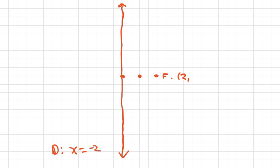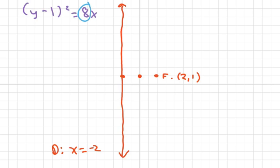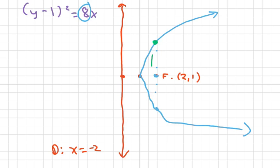The focus is 2 comma 1. The equation is y minus 1 squared equals 8x. The length of the latus rectum is 8, so from the focus I go up 4 and down 4 on the y-axis. The latus rectum points are 2 comma 5 and 2 comma negative 3. That's all — thank you and have a nice day.